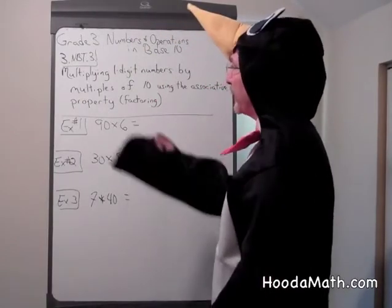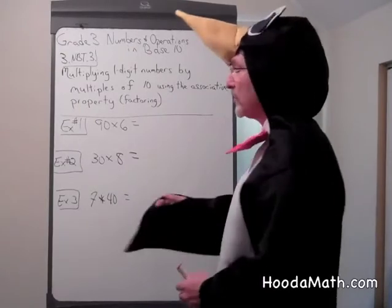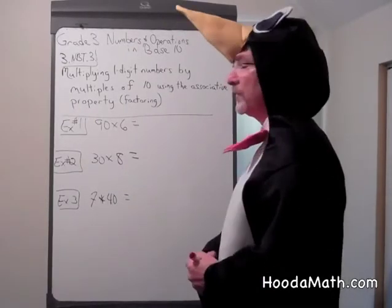We're going to learn today about how to multiply one-digit numbers by multiples of 10 using the associative property and factoring.